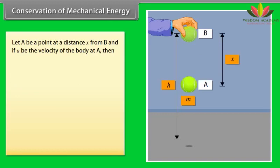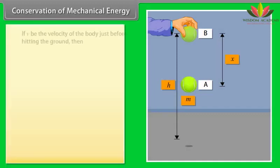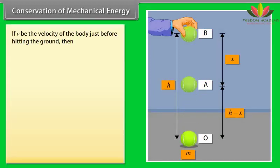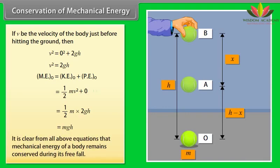Let a be a point at a distance x from b, and if u be the velocity of the body at a, then u square is equal to 2gh. Mechanical energy of the body at a is equal to kinetic energy of the body at a plus potential energy of a body at a. By calculating it, we get the mechanical energy of the body at a is mgh. If V be the velocity of the body just before hitting the ground, then V square is equal to 2gh. Here mechanical energy of the body at o is equal to kinetic energy of the body at o plus potential energy of the body at o. By calculating it, we get mechanical energy of a body at o is mgh. It is clear from all above equations that mechanical energy of a body remains conserved during its free fall.